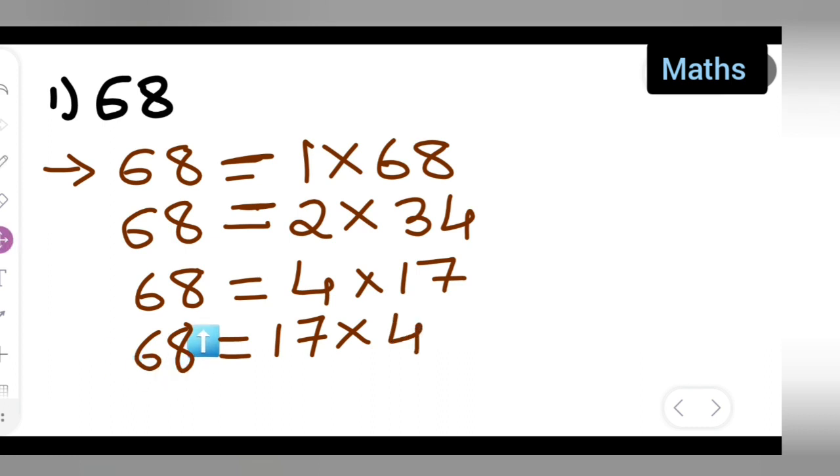17 and 17 is same over here, 4 and 4 is same over here. So, no need to do it further. We will have to stop it because these numbers are repeating 17, 17, 4, 4 is repeating. So you will have to stop.